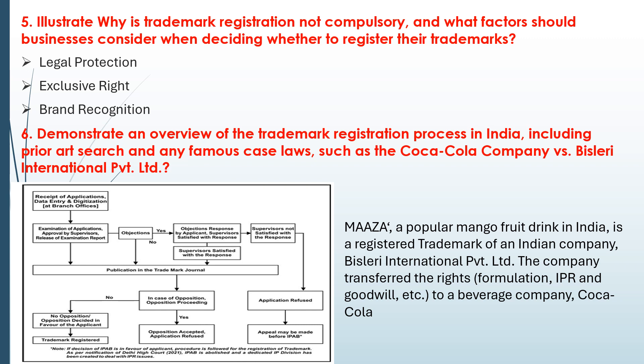The next question asks for an overview of the trademark registration process in India, including famous case laws such as Coca-Cola and the Basillary International. When asked about case studies like Coca-Cola, Basillary, neem, or turmeric, you must explain when it was formed, why there was a clash, and what it involved. The registration process flow is: application submitted → examination → if there is an objection, the claim must be cleared → if no objection, publication in the Trademark Journal. You should draw this flowchart and explain each step in detail.